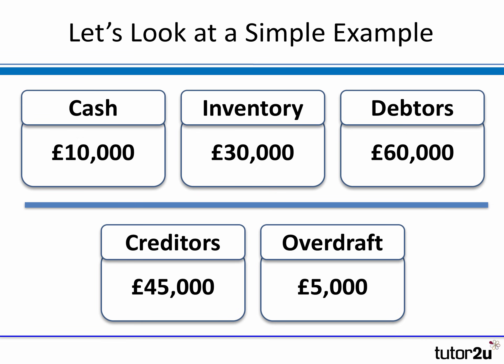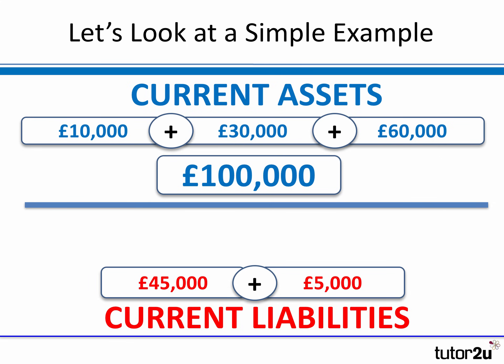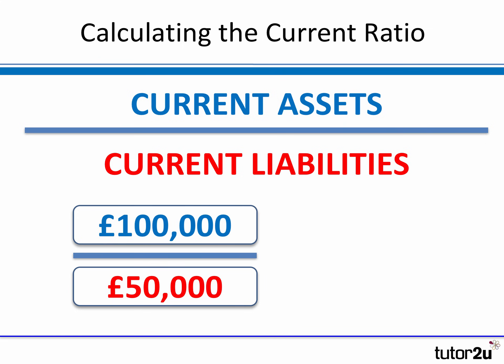Now let's calculate the most common liquidity ratio: the current ratio. You simply divide current assets by current liabilities. Cash £10k + stocks £30k + trade debtors £60k = total current assets of £100,000. Trade creditors £45k + bank overdraft £5k = total current liabilities of £50,000. Dividing: 100 ÷ 50 gives a current ratio of 2 — current assets are twice the level of current liabilities.